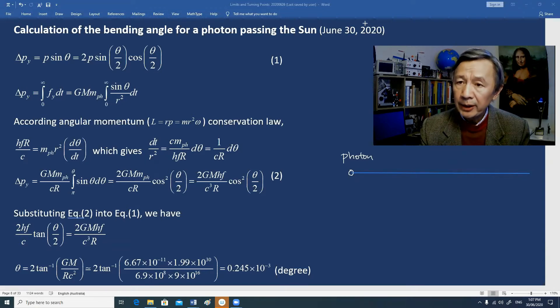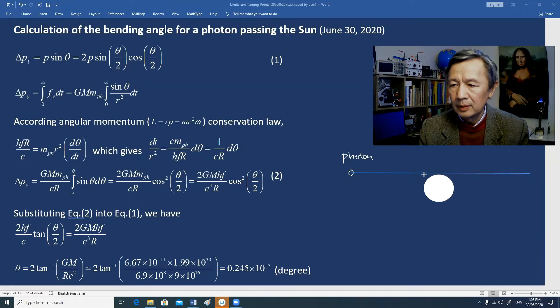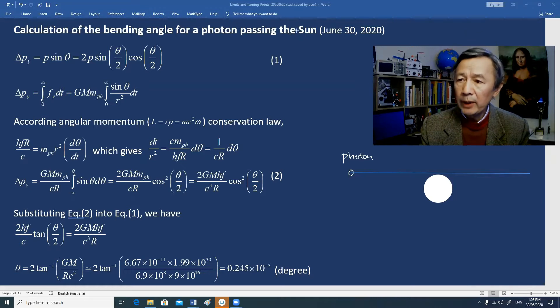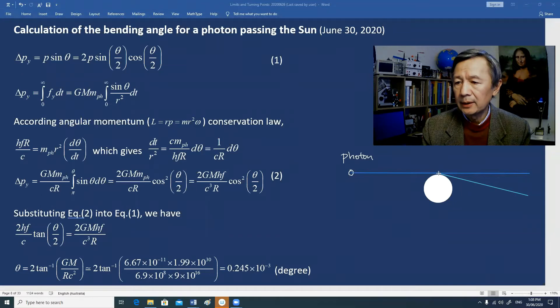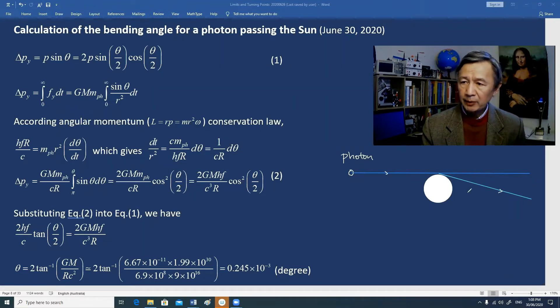However, in the presence of the Sun, the direction of the light wave will be bent, as we have observed experimentally. Actually this is the experimental evidence in support of Einstein's general relativity.